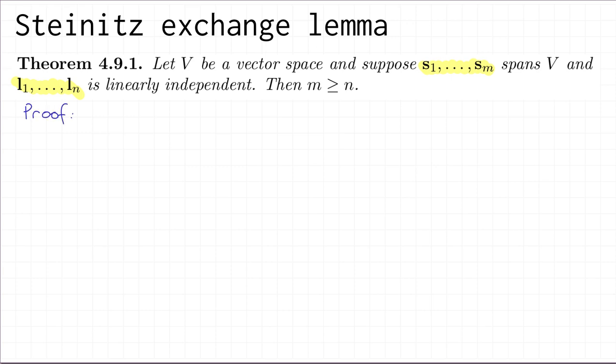We're going to do this argument by contradiction, so we'll assume for a contradiction that m is less than n. A spanning sequence means that every element of V can be written as a linear combination of s_1 up to s_m. In particular, I can write l_1, l_2, l_3, and so on as linear combinations of s_1 up to s_m. So let's fix some scalars which allow us to do that.